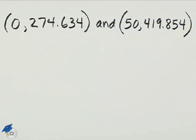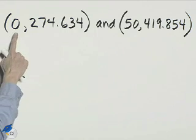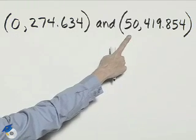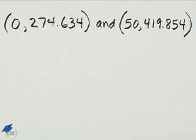These are the ordered pairs we can read from the graph where 0 is the year 2000 and 50 is the year 2050, and these are the values for p(t).